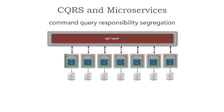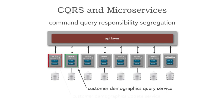What we can do is take that customer demographics service and split it into two services: a customer demographics query service — containing name, address, bill-to and ship-to addresses, and payment information — and an update service. It's not only the model and the database, it's the scalability as well. How many reads do we have? 300,000 reads. How many writes? About 3,000 a day. There's a huge difference in scalability needs — a small amount of writes versus a massive amount of reads — and this is a good use case for splitting these two services up.